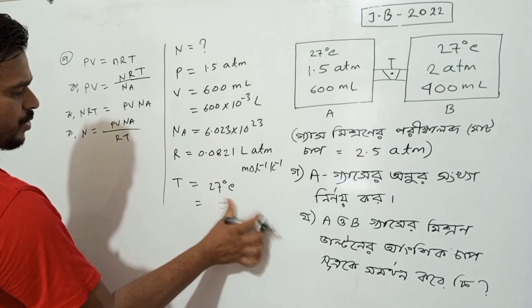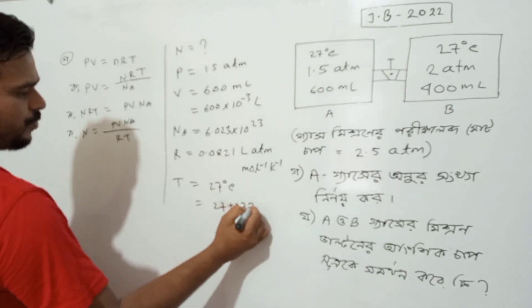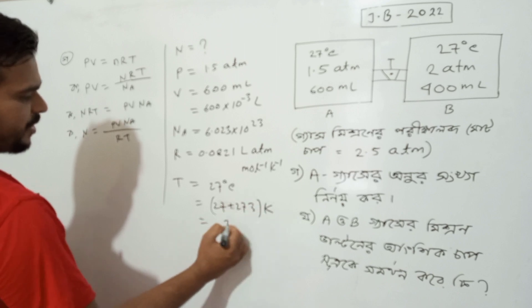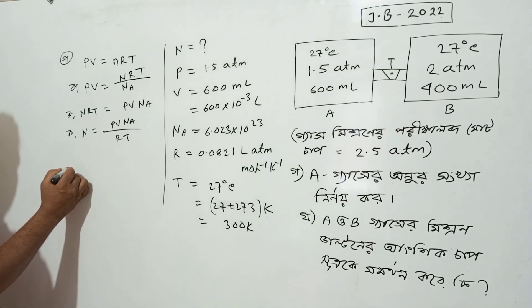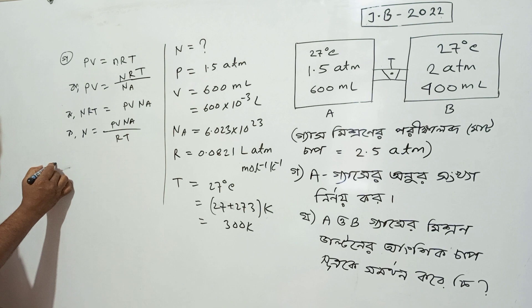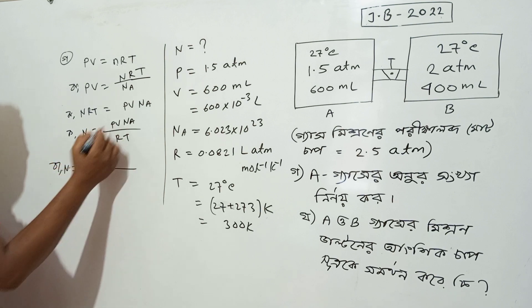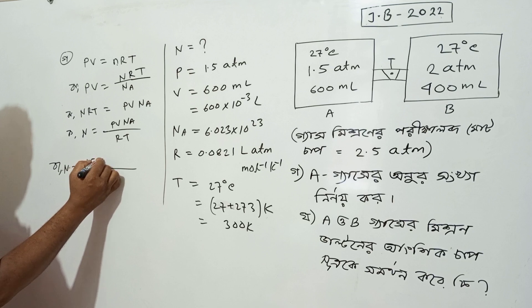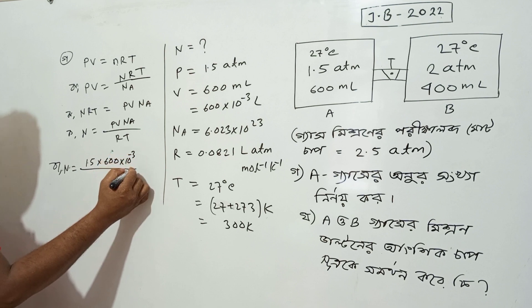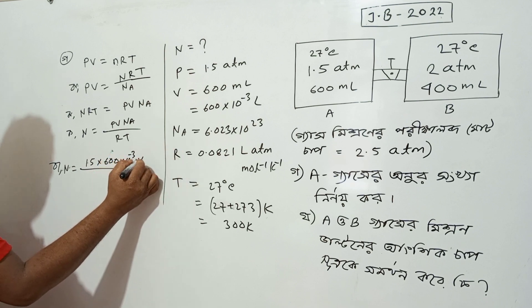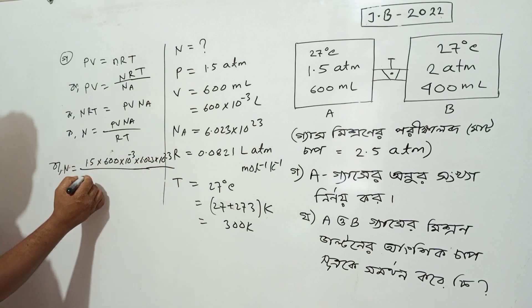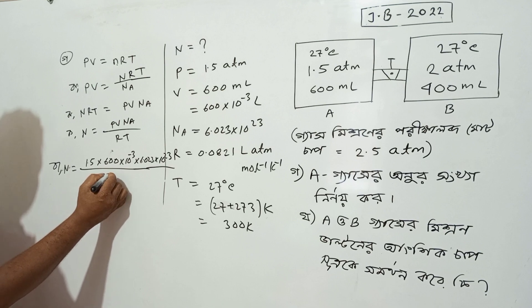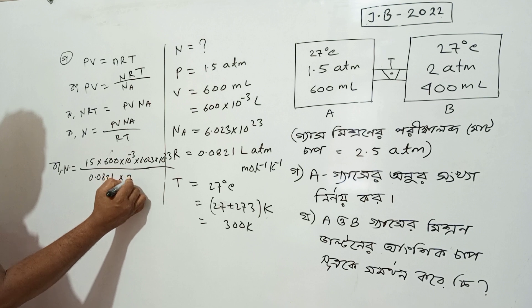The temperature 70°C converts to approximately 343 Kelvin, using about 300 Kelvin here. Substituting: 1.5 atm, 600 mL (×10⁻³ liters), 6.023×10²³, divided by R = 0.0821 and T = 300 Kelvin.